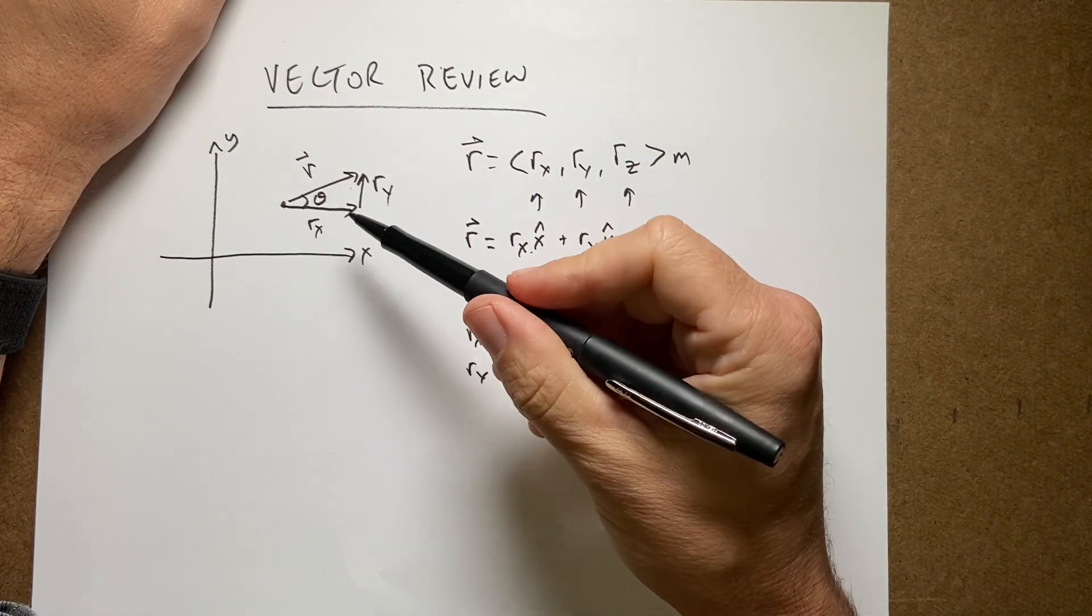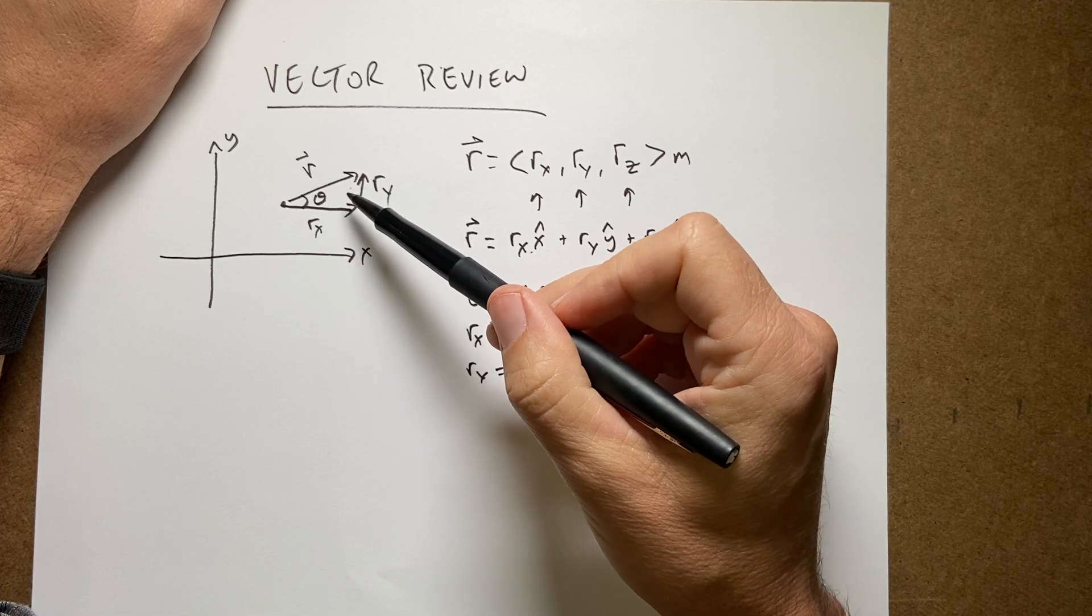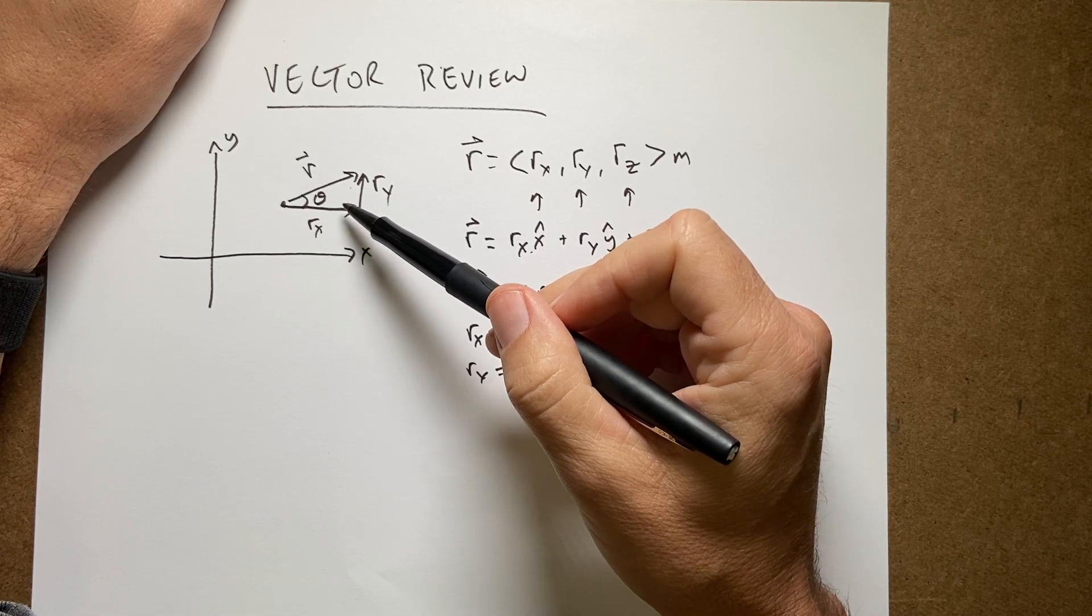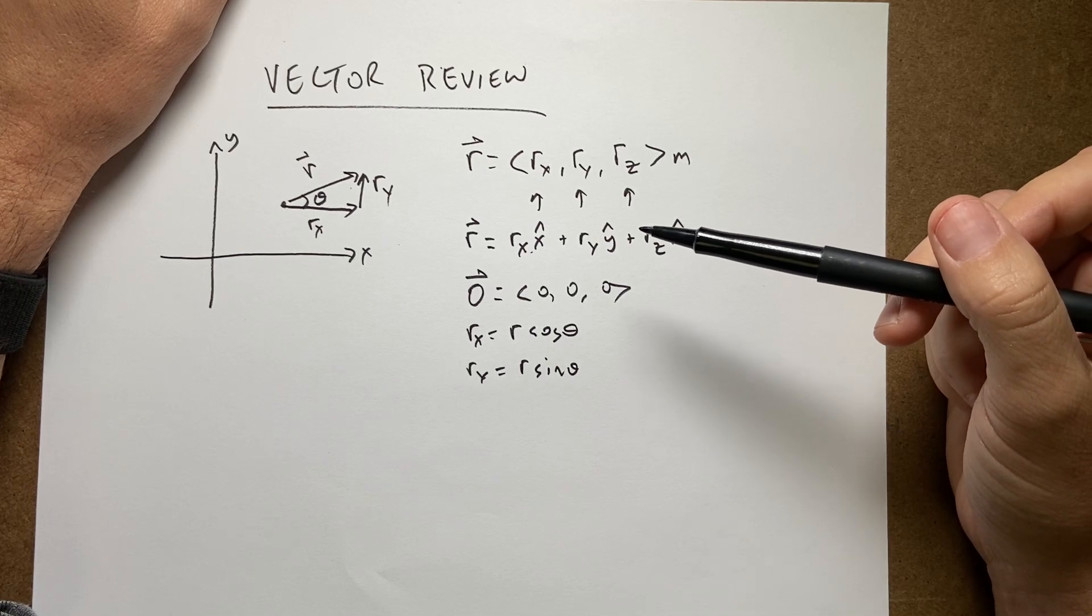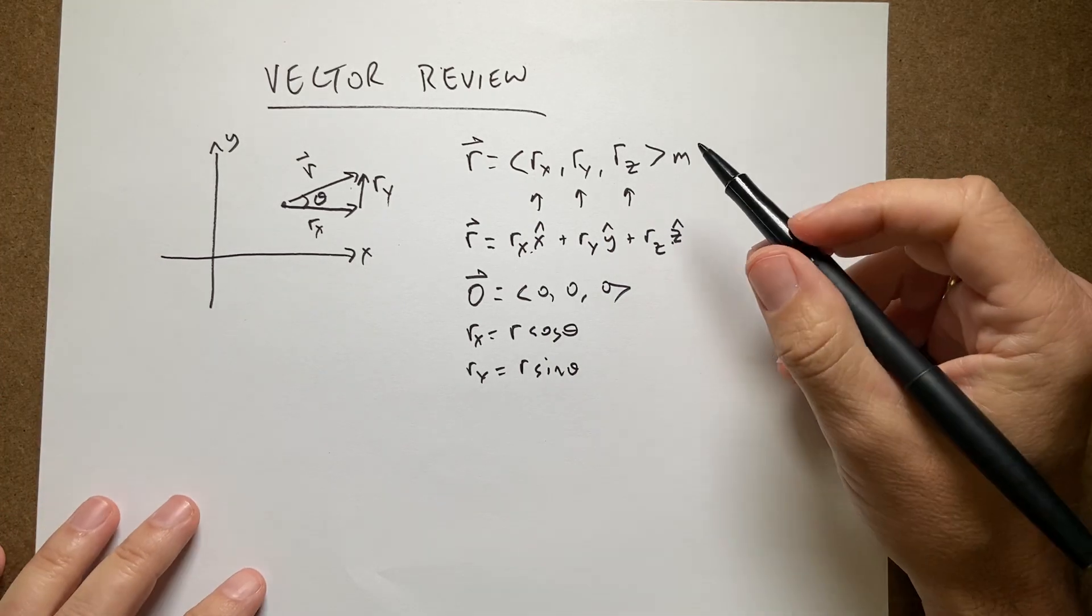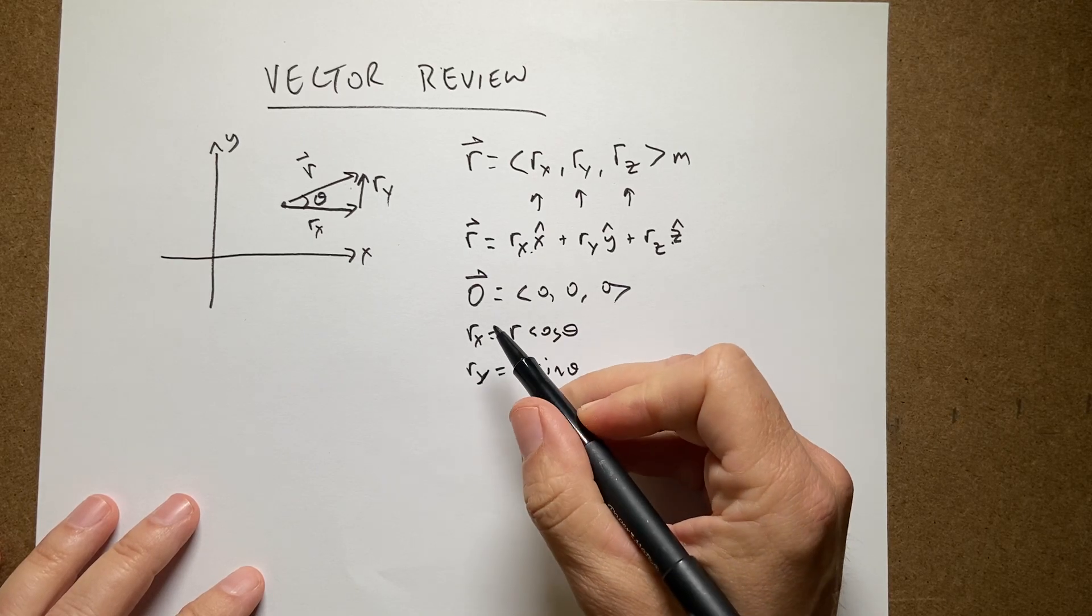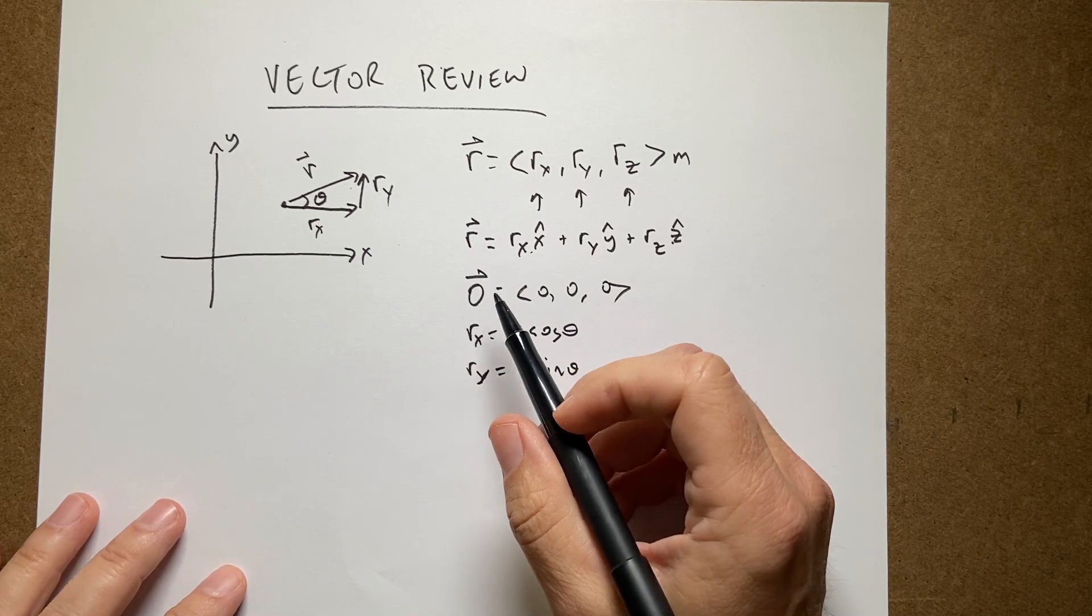And that's why a lot of the earlier first semester physics is in 2D because it's easier. And when we get to magnetic fields, there is no 2D. It's 3D. You can't do it in 2D. You can, I know, but it's just not easy.